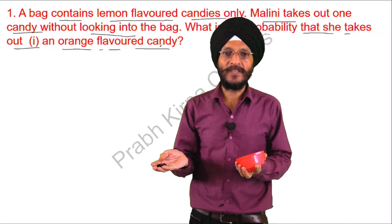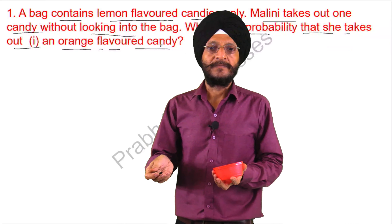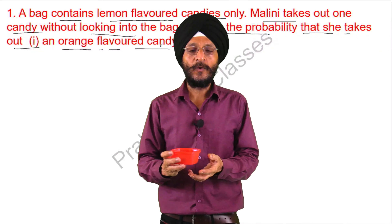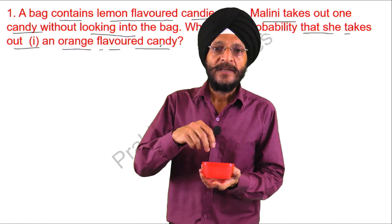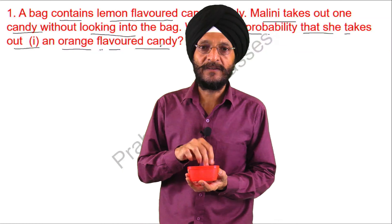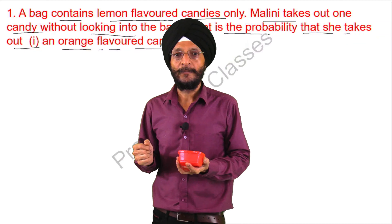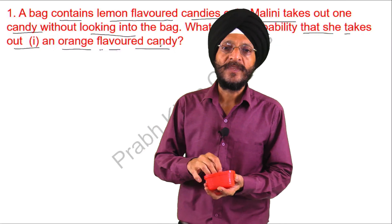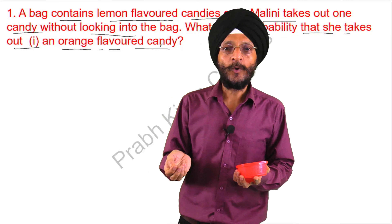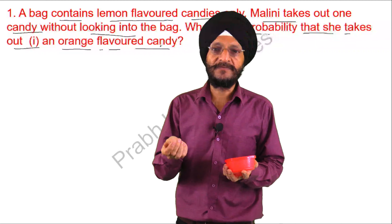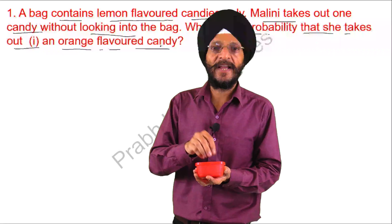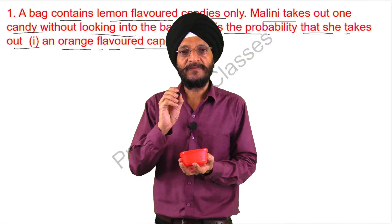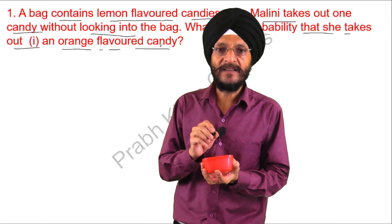Suppose there are four pieces before us which are of black color. We put these four pieces in a jar. Now, what is the chance that if I pick any of these objects, it will be of red color? The chances are zero. The probability of getting a red color object is zero because we are having only black color objects. So, the probability of getting a black colored object is one, whereas the probability of getting a red colored object is zero.